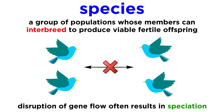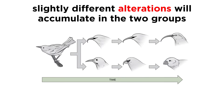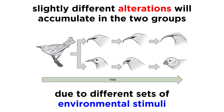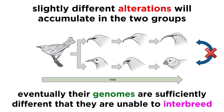When gene flow is disrupted, this can potentially result in speciation, as different alterations can accumulate in the two groups according to different sets of stimuli, and after enough time their genomes will be sufficiently different that they can no longer interbreed, making them by definition two different species.